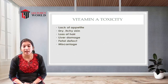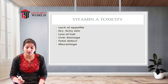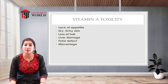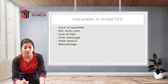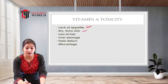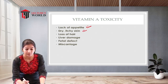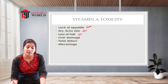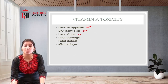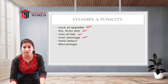First is vitamin A toxicity. If a person is having hypervitaminosis of vitamin A, they may have lack of appetite — the person is not feeling hunger. They may have dry and itchy skin due to dryness of the skin. There may also be loss of hair from the scalp, eyelids, and eyebrows.